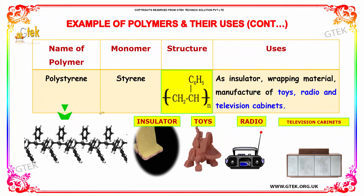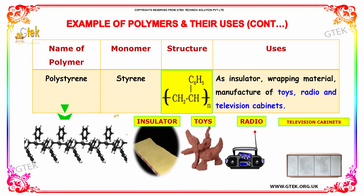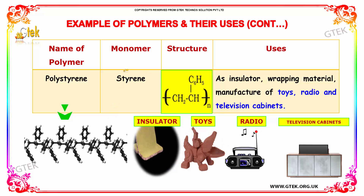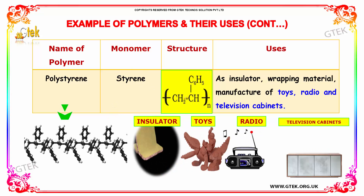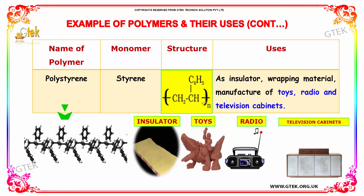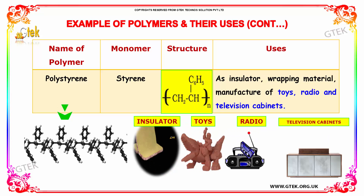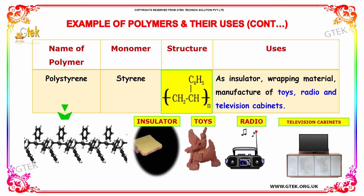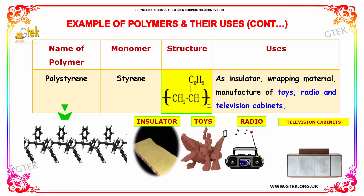Another example is polystyrene. Styrene is an excellent monomer and its structure is as shown here. Polystyrene is generally used as a wrapping material, for toys, and for radios and television cabinets.